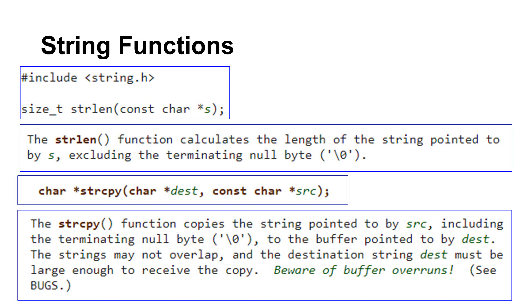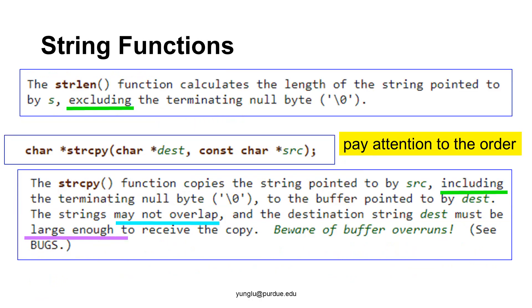Let's consider another string function, strcpy. This function copies one string to another string. The strcpy function takes two arguments, both of them are pointers. The first argument is the destination. The second is the source. The function copies the characters from the source to the destination, including the terminating null character. The document says that the memory space for the source and the destination must not overlap. If the memory space overlaps, the behavior of the program is undefined. Also, the destination space must be large enough to accommodate the entire string from the source. C does not check either condition. It is the programmer's responsibility to ensure that these two conditions are met.